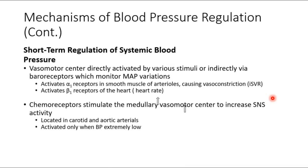For short-term regulation, epinephrine and norepinephrine act on alpha and beta receptors. Alpha-1 receptors in smooth muscle of arterioles cause vasoconstriction; beta-1 receptors are located in the heart. Together these change mean arterial pressure.